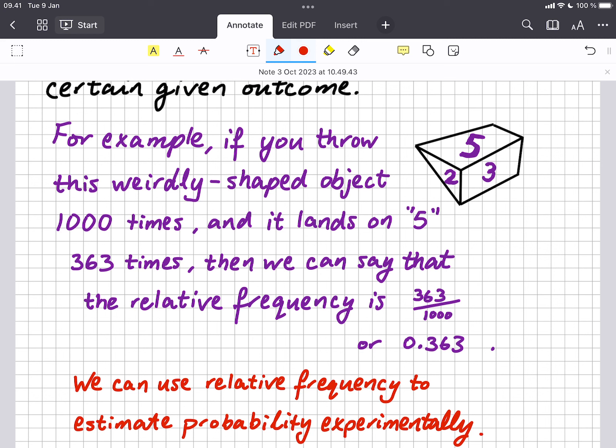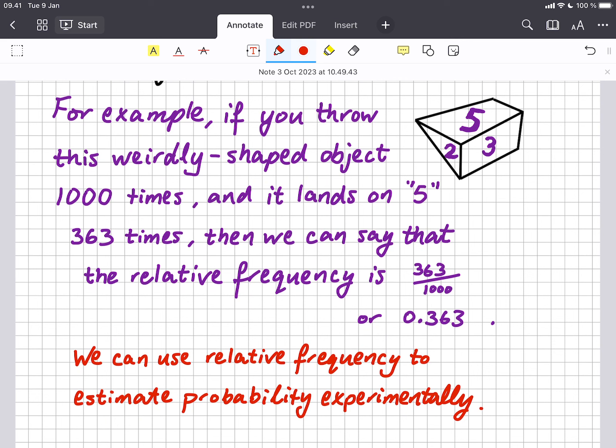Which as a decimal is 0.363, that's just 363 divided by a thousand. And you can use relative frequency to estimate probability experimentally. So although we can't easily calculate what the probability of a five is, we can do the experiment a thousand times and get an estimate from the relative frequency that the probability is 0.363. It's an experimental probability.